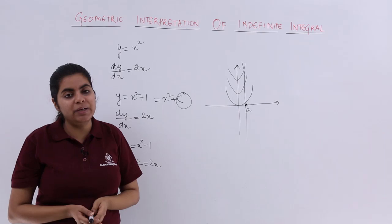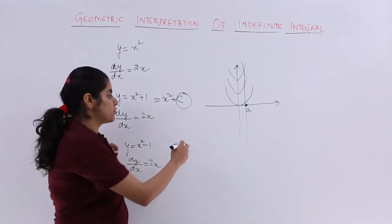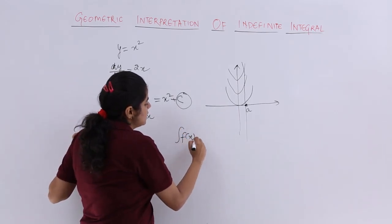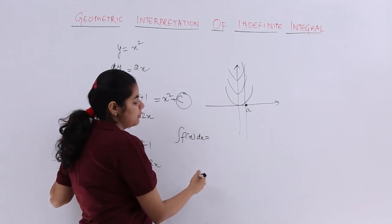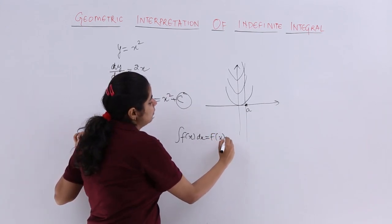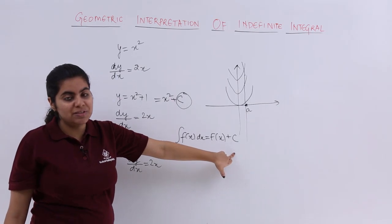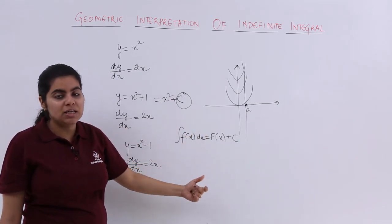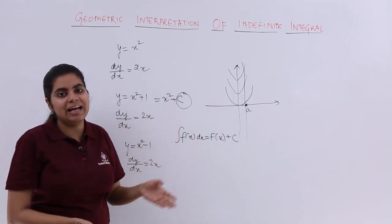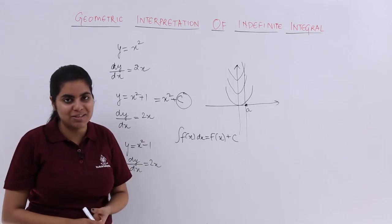That is the geometric interpretation. Different values of c in the integration of f(x)dx that gives me f(x) plus c, different values of c will give me different members of the same family. And that has been observed in the example as well.